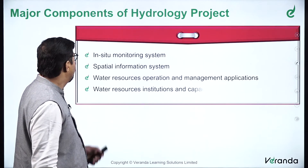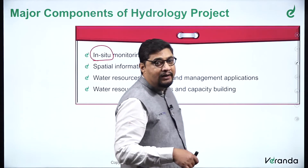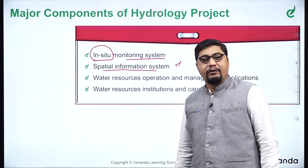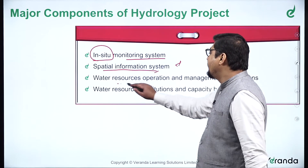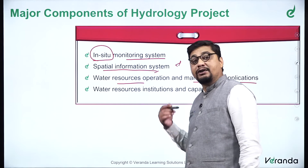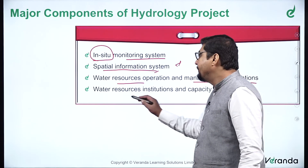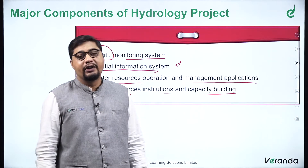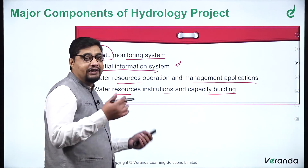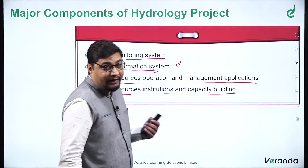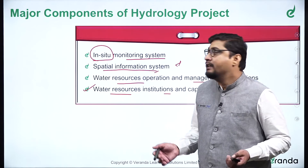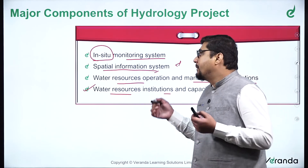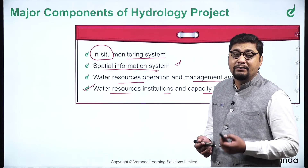The major components of the National Hydrology Project are: first, in-situ monitoring system — meaning monitoring exactly at the site, not from external sources. Then spatial information — information about the terrains and geography of the region. Then water resources operation and management application — how water is utilized now and how it can be utilized in the future. Then water resources institutions and capacity building, such as the National Water Academy in Pune. Water is an indispensable resource, and with India's population, water management will be very crucial in times to come.